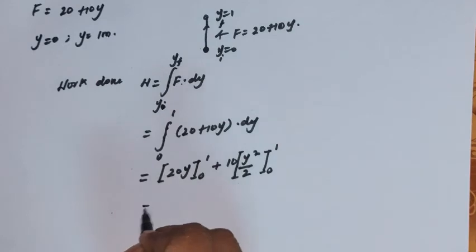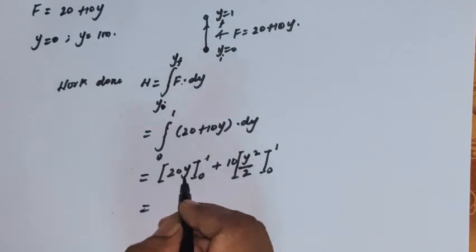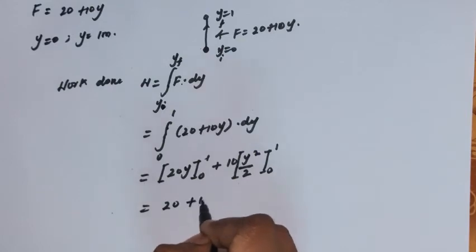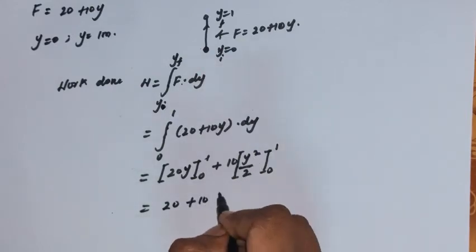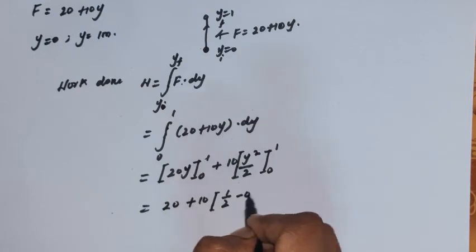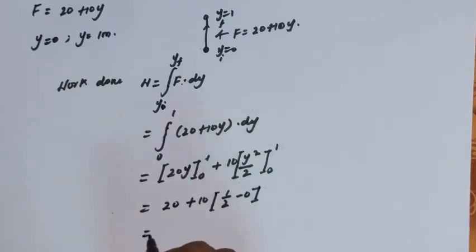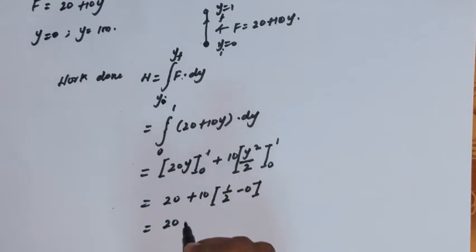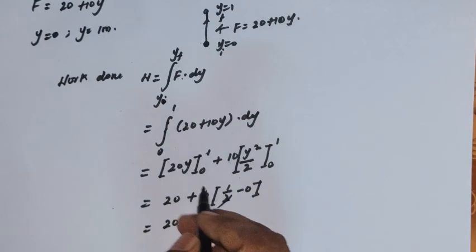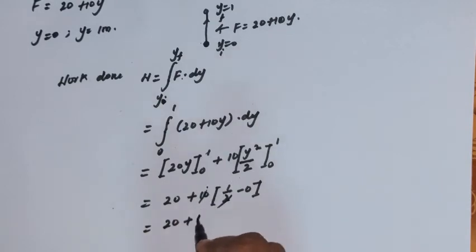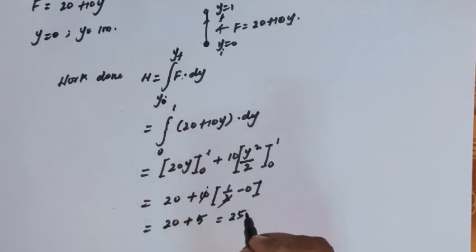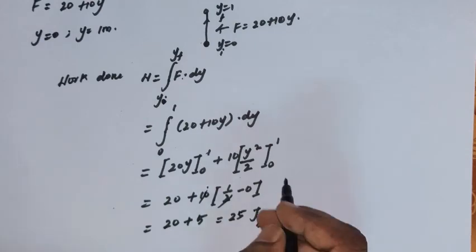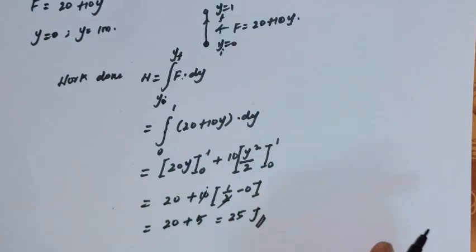Substituting the upper limit: 20 into 1 gives 20, minus the lower limit 0. Plus 10 times: substituting the upper limit gives 1 by 2, minus 0 for the lower limit. So it gives 20 plus 10 times 1/2, which equals 20 plus 5, giving 25 joules. This is the amount of work needed to push the particle from y equal to 0 to y equal to 1.